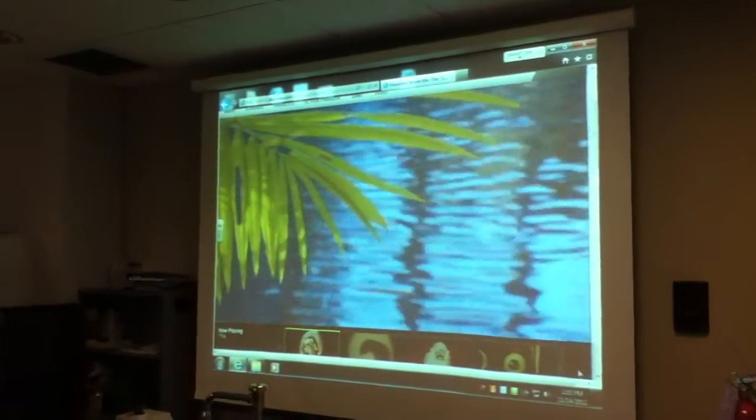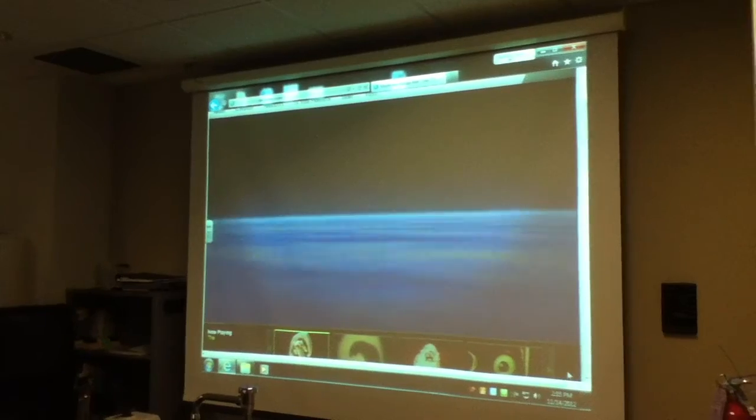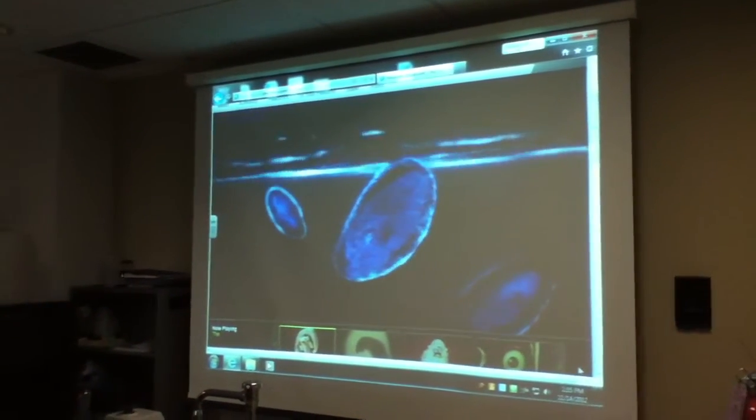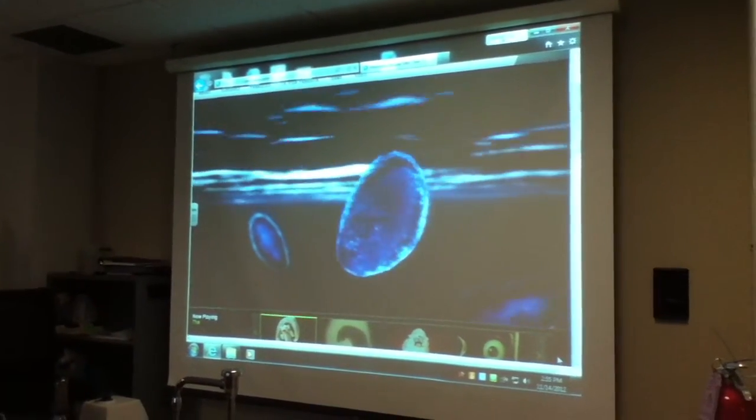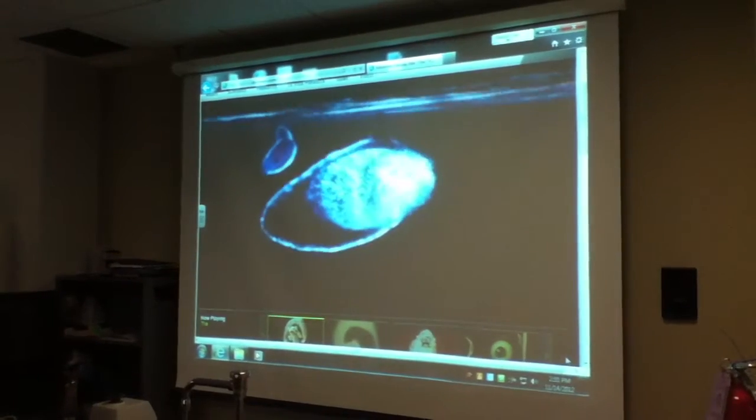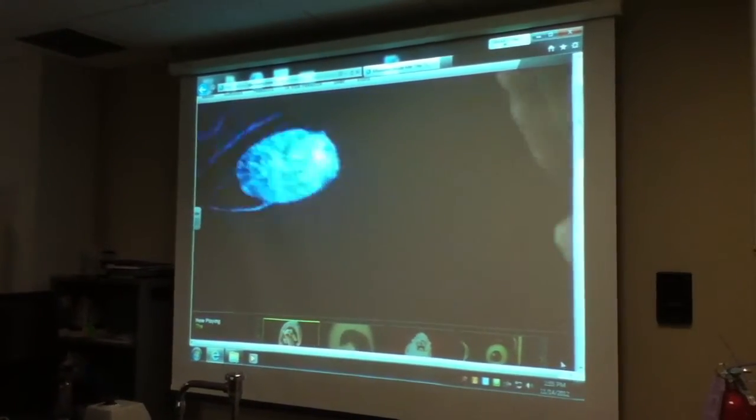Schistosomes live in freshwater lakes in Asia, South America, and Africa. Their eggs are released into the environment by the feces of infected people. Schistosome eggs hatch once they come into contact with freshwater.